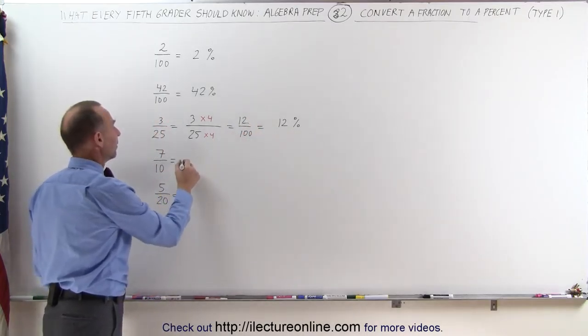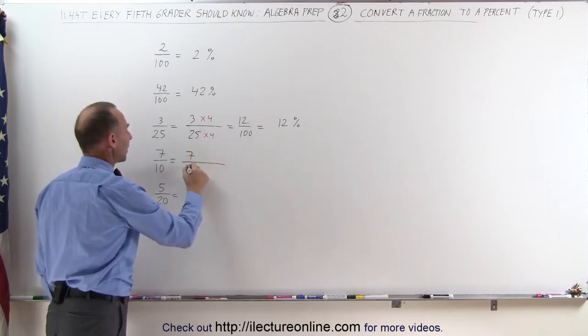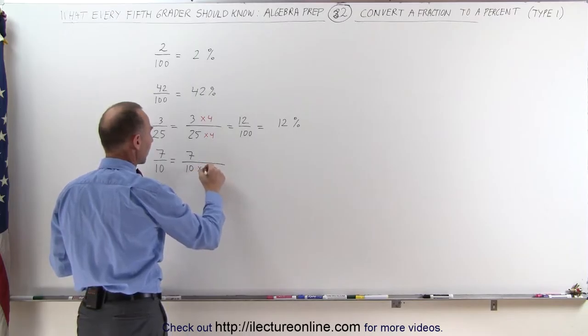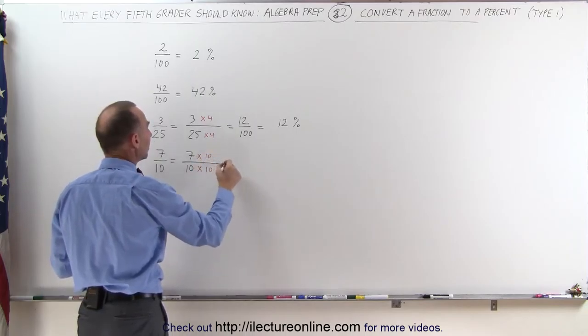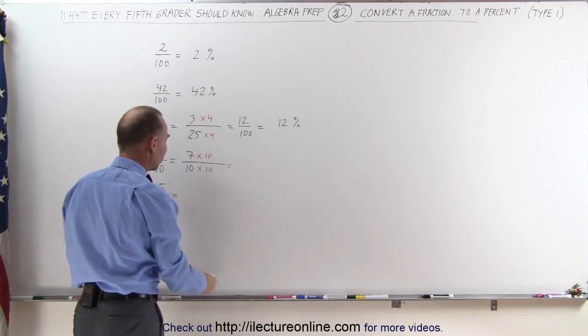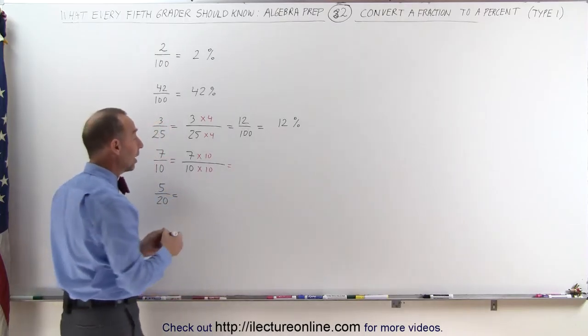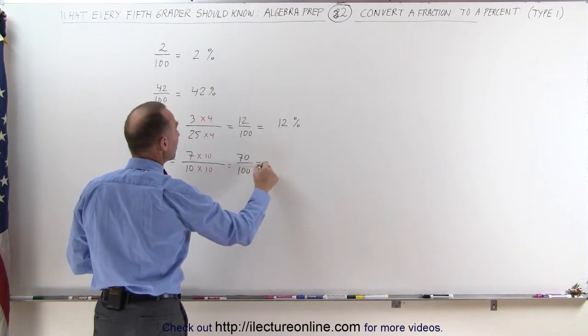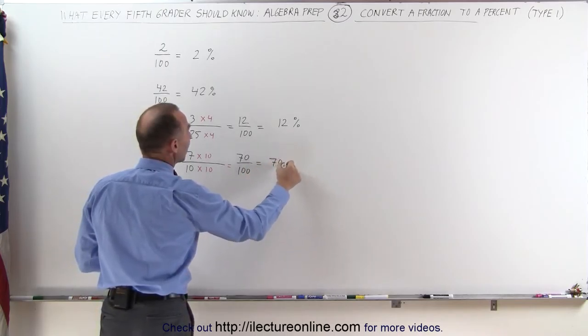Same here, I can take 7 divided by 10 and realize that if I multiply the denominator times 10, and I do the same to the numerator, then I get a new fraction that has 100 as a denominator. This becomes 70 divided by 100, which means that this is 70%.